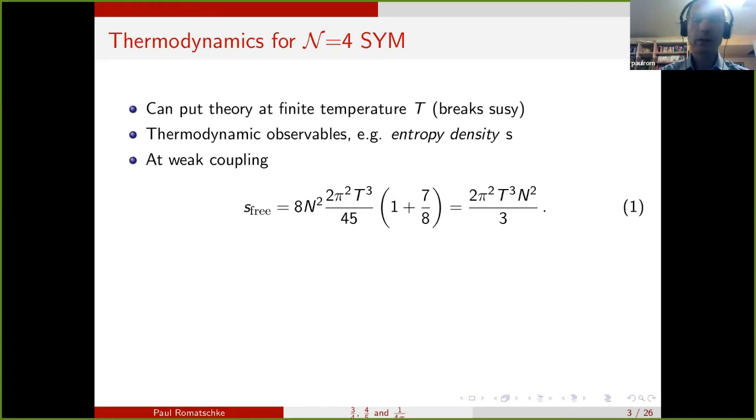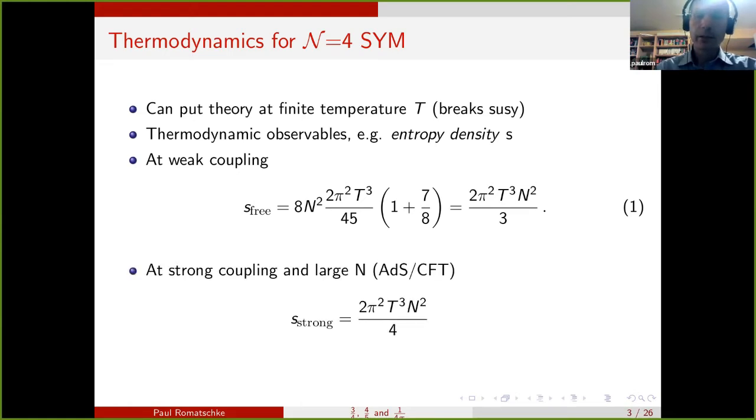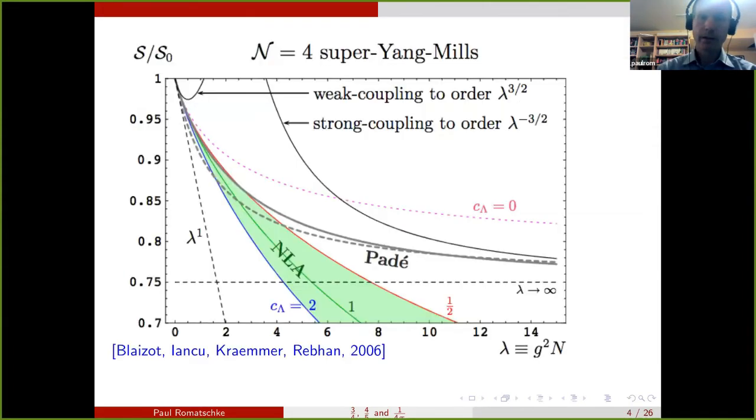You can put it at finite temperature, which breaks supersymmetry, but it allows you to access thermodynamic observables such as the entropy density s. At weak coupling you find that the free entropy density is given by this ratio here, it's proportional to the temperature cubed times the number of colors N squared and a factor 2π²/3. By contrast, if you use AdS/CFT, you can calculate the same quantity at strong coupling, and you find that it scales like T³N² with a different factor 2π²/4.